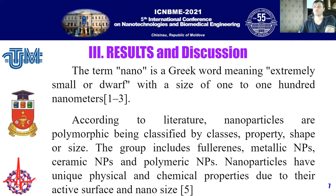The term 'nano' is a Greek word meaning extremely small, with a size of 1 to 100 nanometers. According to the literature, nanoparticles are polymorphic, being classified by class, property, shape, or size. The group includes fullerenes, metallic nanoparticles, ceramic NPs, and polymeric NPs.